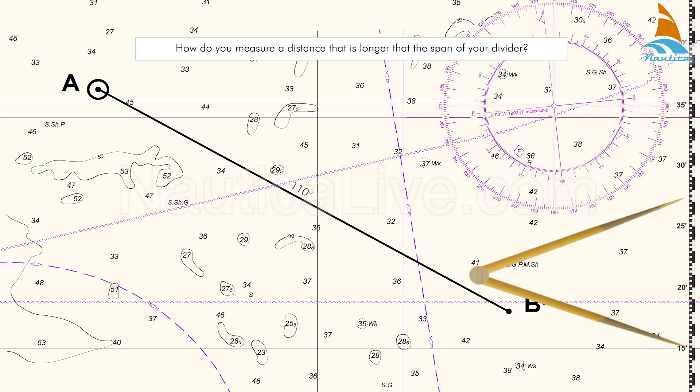Use the dividers and span a distance of 10 miles on the latitude scale which is closest to point A and B.